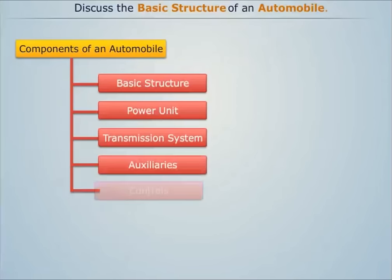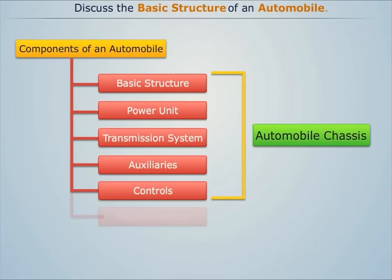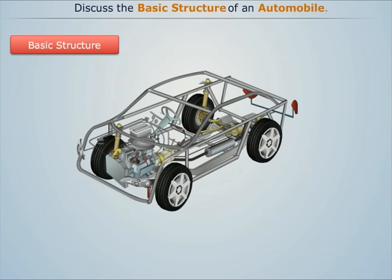The first five components are collectively known as the automobile chassis. Now let's understand the basic structure of an automobile.